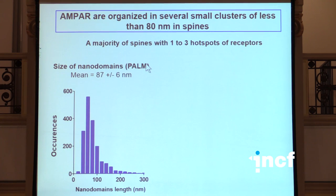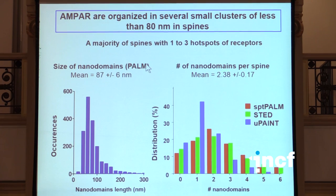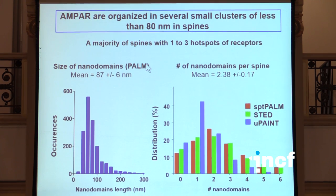So what are the properties of these clusters? They are very homogenous in their size. This is the distribution of their size obtained from Gaussian fits, with a size in the order of 80-90 nanometer diameter. What's extremely variable is the actual number of nanodomains per spine. Looking at those properties with various super-resolution methods, including STED, you see that the number of nanodomains per spine is very variable. On average, it's around one to two nanodomains per spine, but it can be none or up to five or six nanodomains per spine.